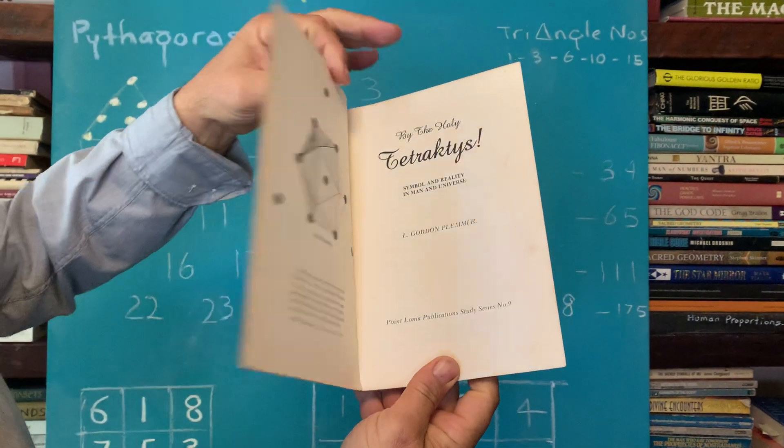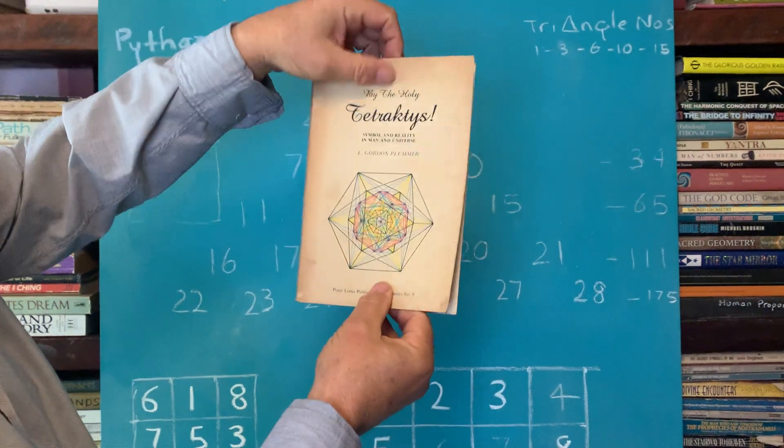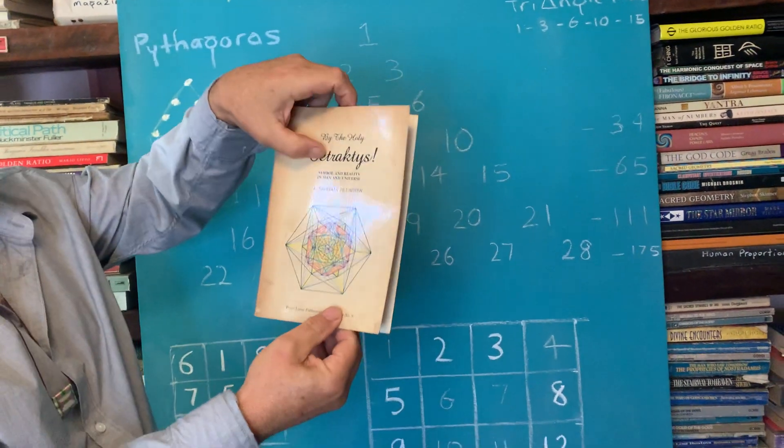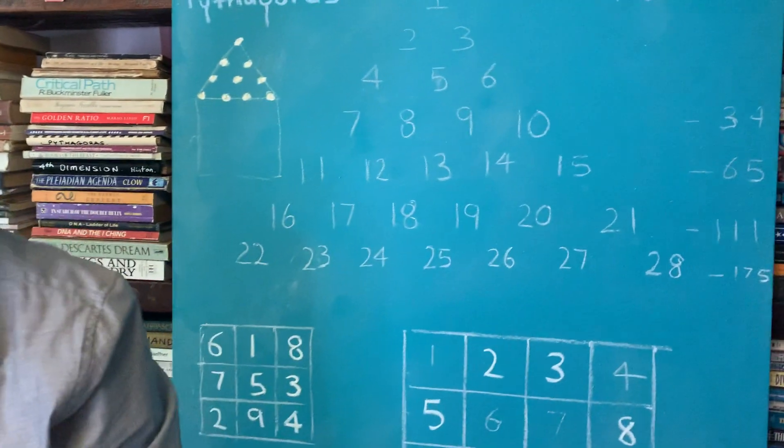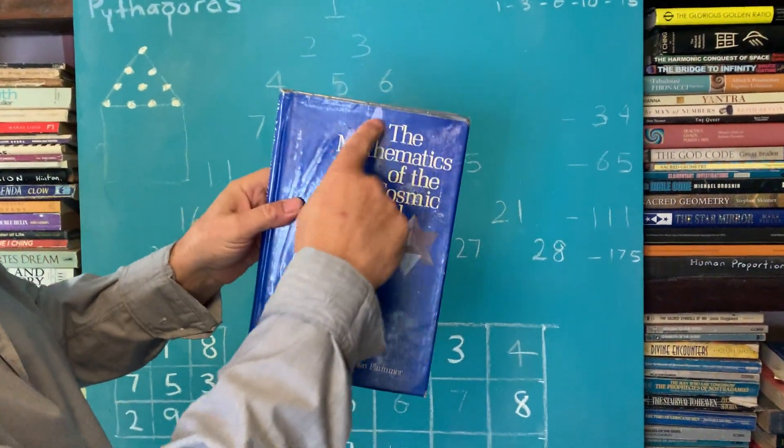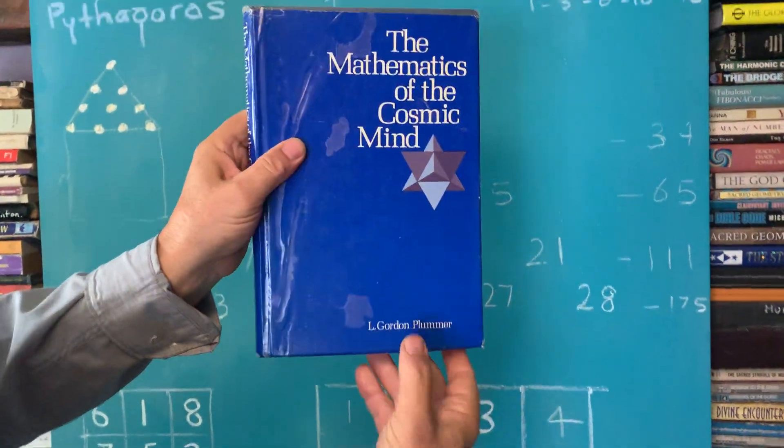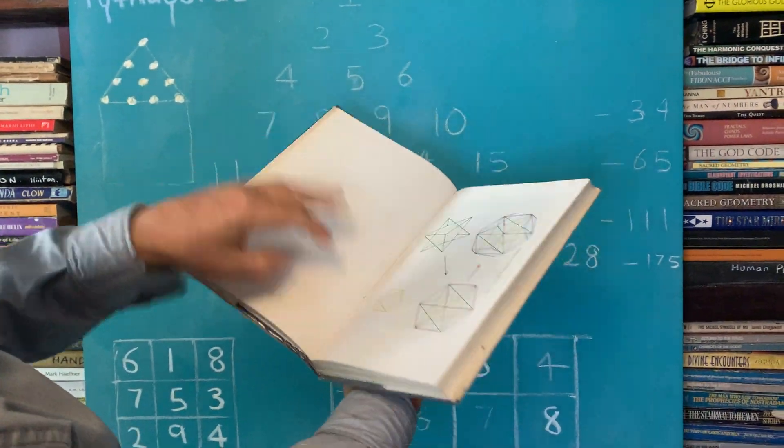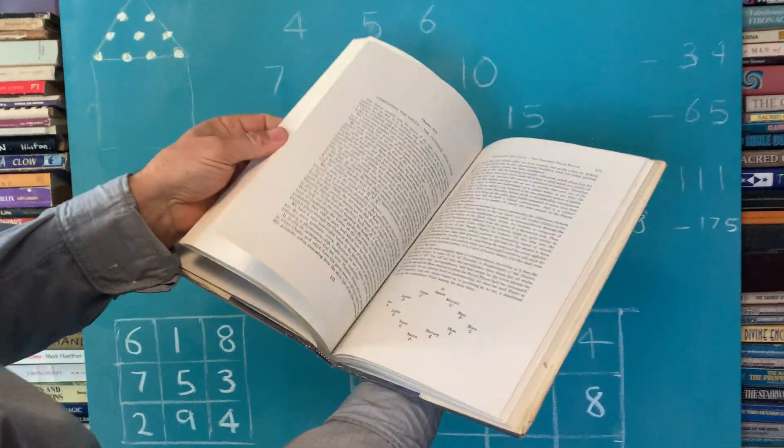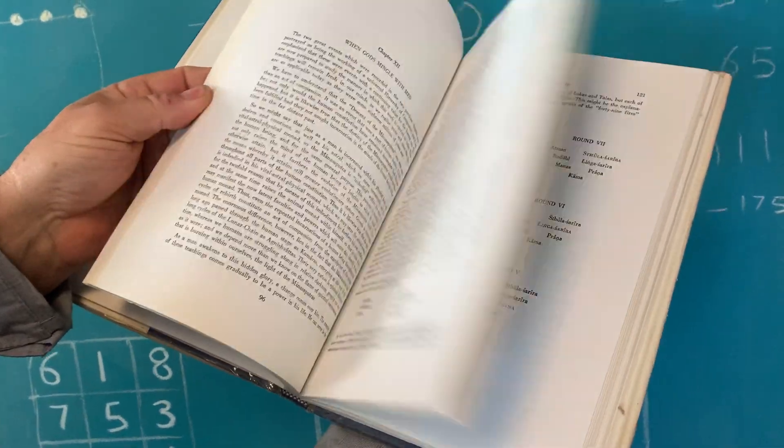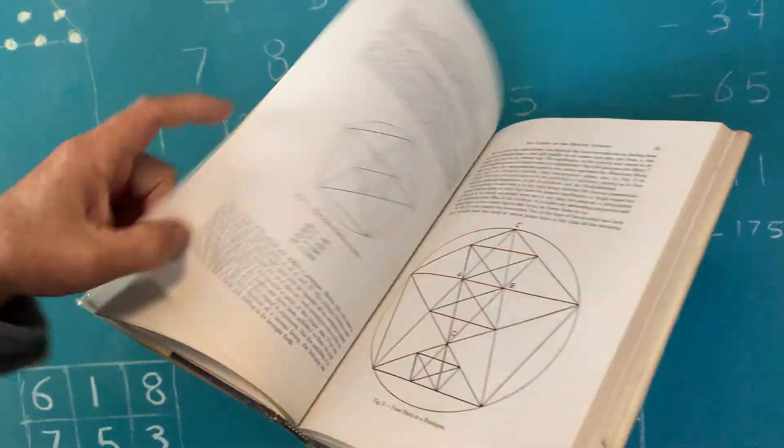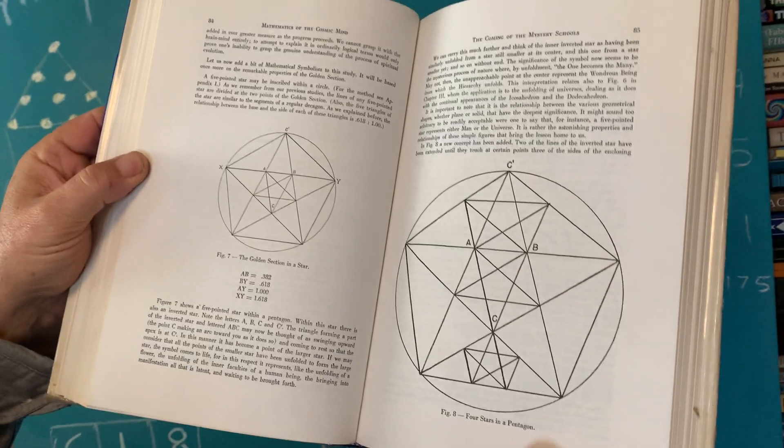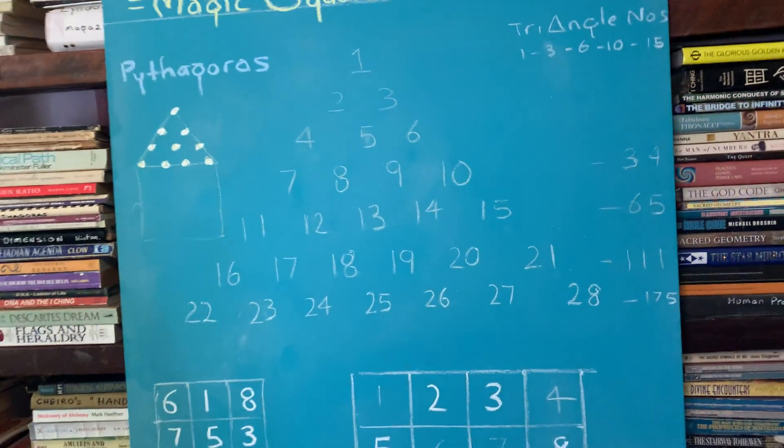So this is from my library called the Tetraktys and it was written by Gordon Plummer. Gordon Plummer was a favorite theosophist of mine. He wrote the mathematics of the cosmic mind, and it was full of amazing diagrams and geometries of the universe. So we can see here the pentacle within the pentacle. So how is the Tetraktys connected to all of this?